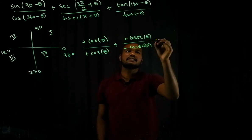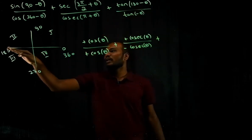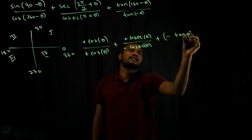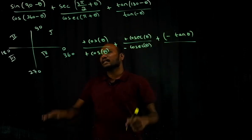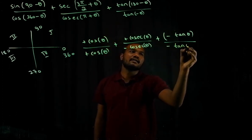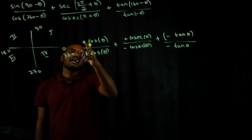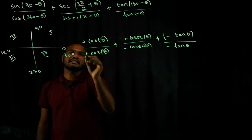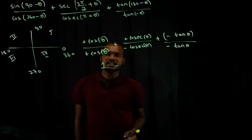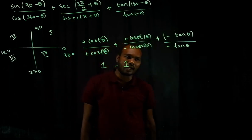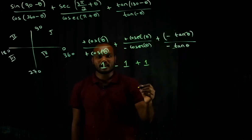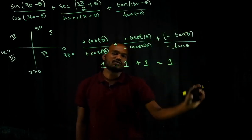Plus tan(180° − θ) is second quadrant where tan is negative, giving −tan θ. Divided by tan(−θ) is fourth quadrant where tan is negative: −tan θ. Now cos θ/cos θ cancels to 1, plus (−cosec θ/cosec θ) gives −1, then −tan θ/−tan θ = +1. So 1 − 1 + 1 = 1. The answer is 1.